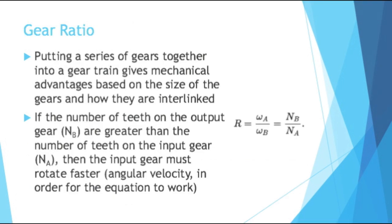I'm going to briefly touch on the gear ratio. This is a topic for a whole other video, but basically, putting a series of gears together into a gear train gives mechanical advantages based on the size of the gears and how they are interlinked. That equation shows the rotational velocity of gear A over the rotational velocity of gear B equals the number of teeth of gear B over the number of teeth of gear A.